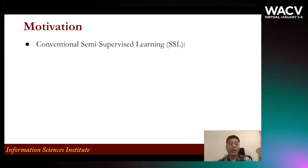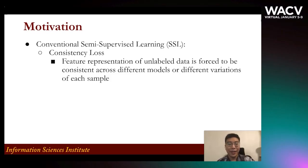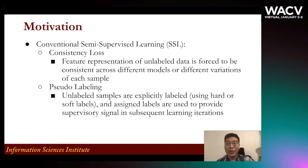The motivation of our paper is that there are two conventional semi-supervised learning directions. The first one is consistency loss, where feature representation of unlabeled data is forced to be consistent across different models or different variations of each sample. The second one is pseudo-labeling, where unlabeled samples are explicitly labeled and assigned labels are used to provide superior signals in subsequent learning iterations.